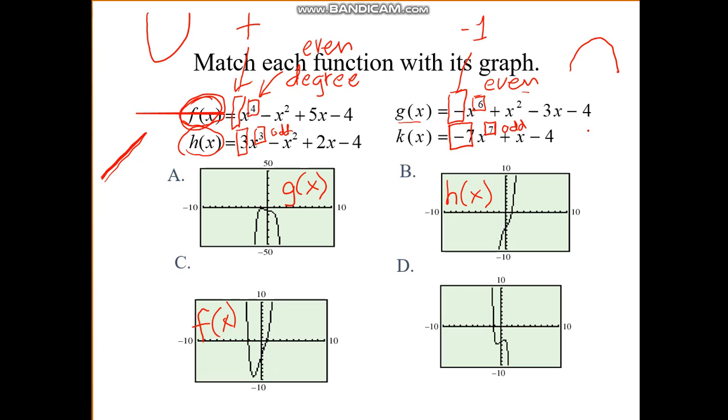So an odd number that's negative, the donkey walks downhill. Again, curvier than a line, but generally matches the pattern: rise on the left, fall on the right. So this is k of x.